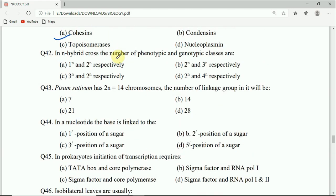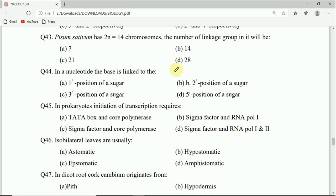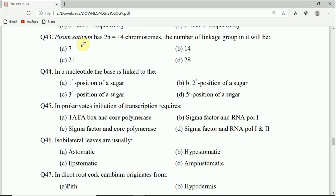Question 42: In a hybrid cross, the number of phenotypic and genotypic classes are 1 to the n and 2 to the n respectively, 2 to the n and 3 to the n respectively, 3 to the n and 2 to the n respectively, or 2 to the n and 4 to the n respectively. Correct answer will be B, that is 2 to the n and 3 to the n respectively. Question 43: Pisum sativum has 2n equals 14 chromosomes. The number of linkage groups in it will be 7.